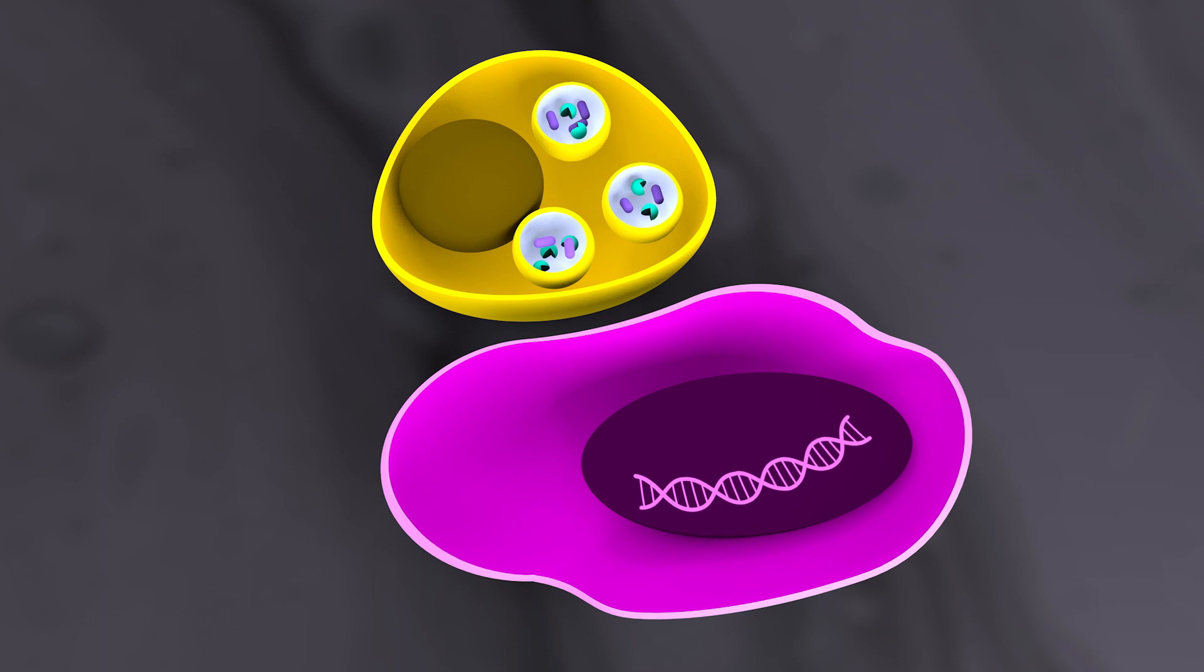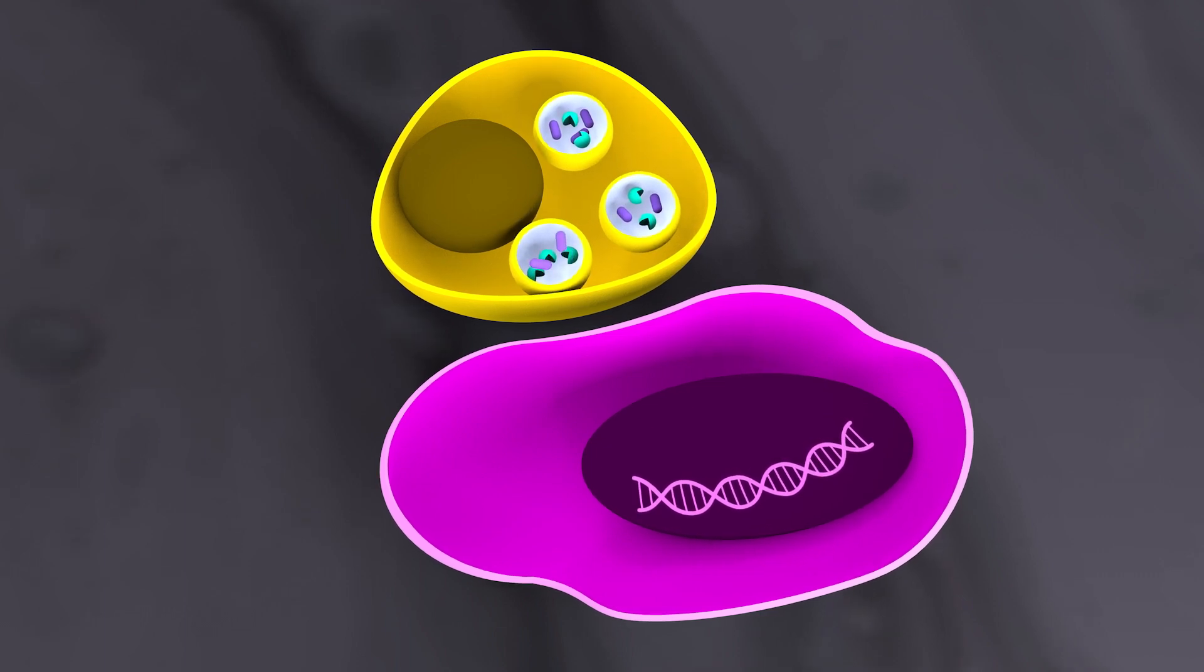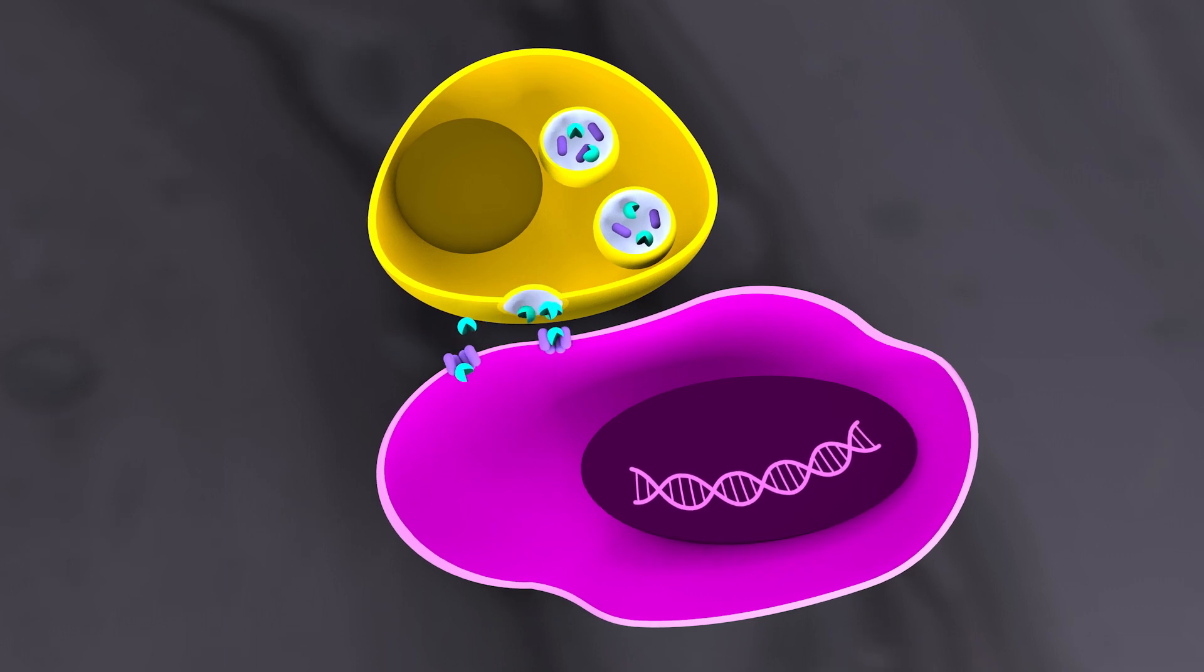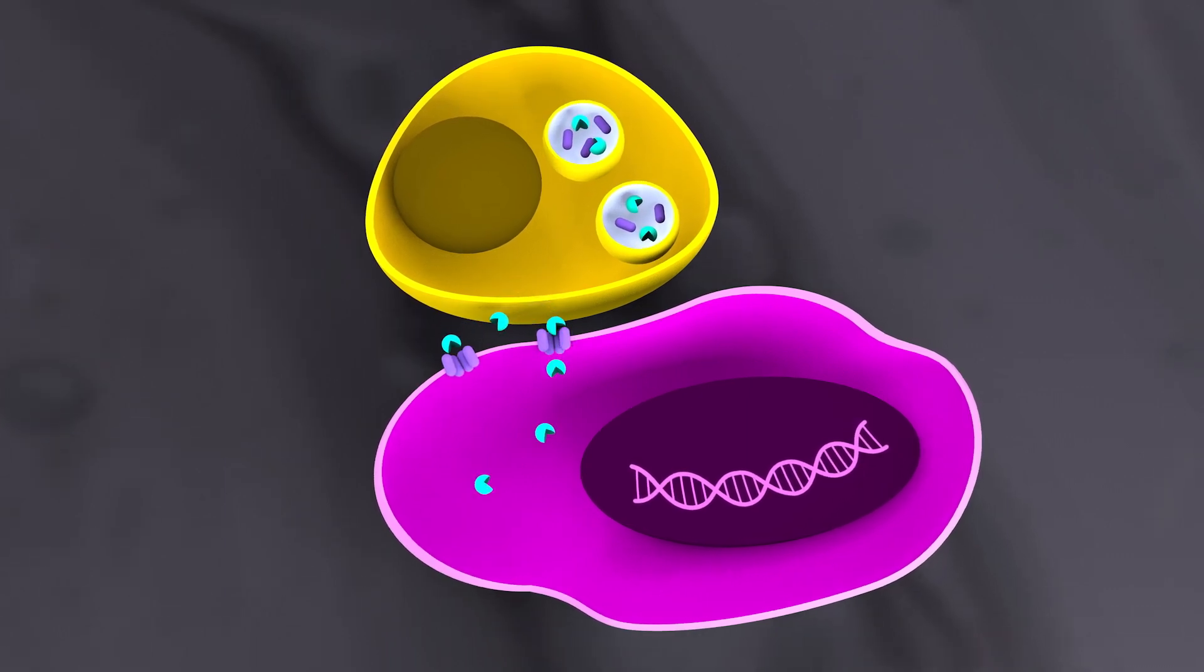The animation shows the course of the damage. First, the T cell releases cytotoxic proteins. Perforin forms pores in the tumor cell membrane. Granzyme B penetrates through these pores into the interior of the tumor cell.